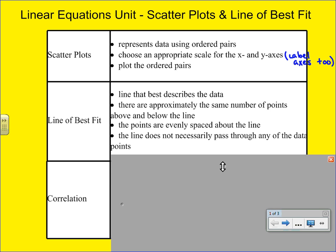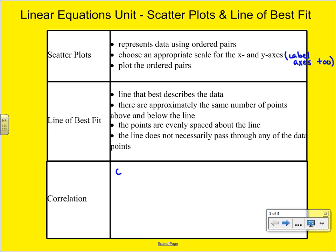Lastly, after you've made your scatter plot and drawn in your line of best fit, we're going to look at something called correlation. Correlation is something that describes the relationship between x and y.